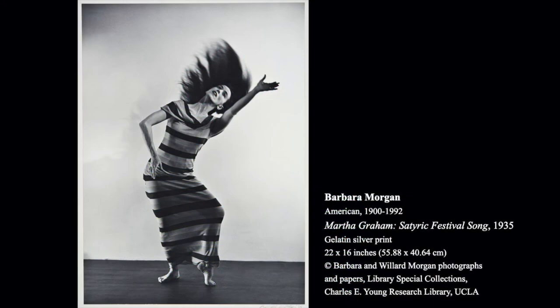Warhol used a photograph by Barbara Morgan as source material for his print. Barbara Morgan was an American photographer renowned for her images of modern dancers. It makes me wonder again, who was this woman who captured the imagination of Barbara Morgan and Andy Warhol? Just using observation, what details do you notice about the figure? Does that lead to any interpretations or guesses about who she might be?